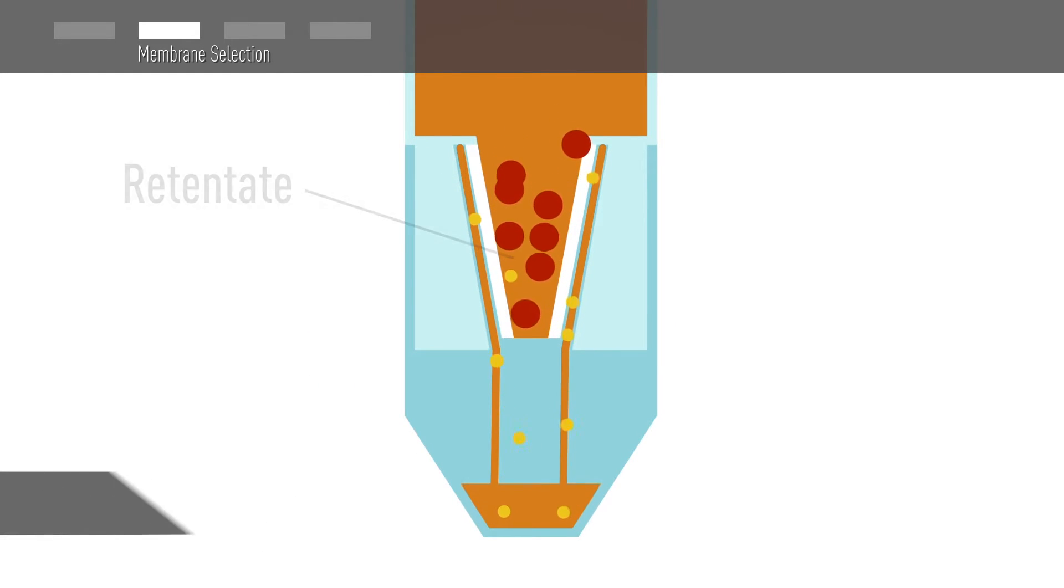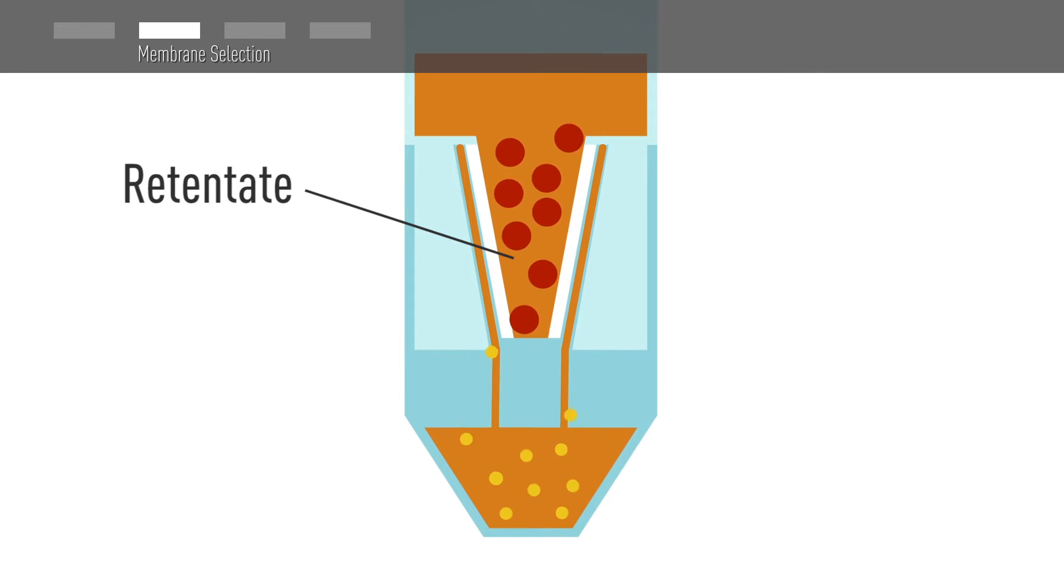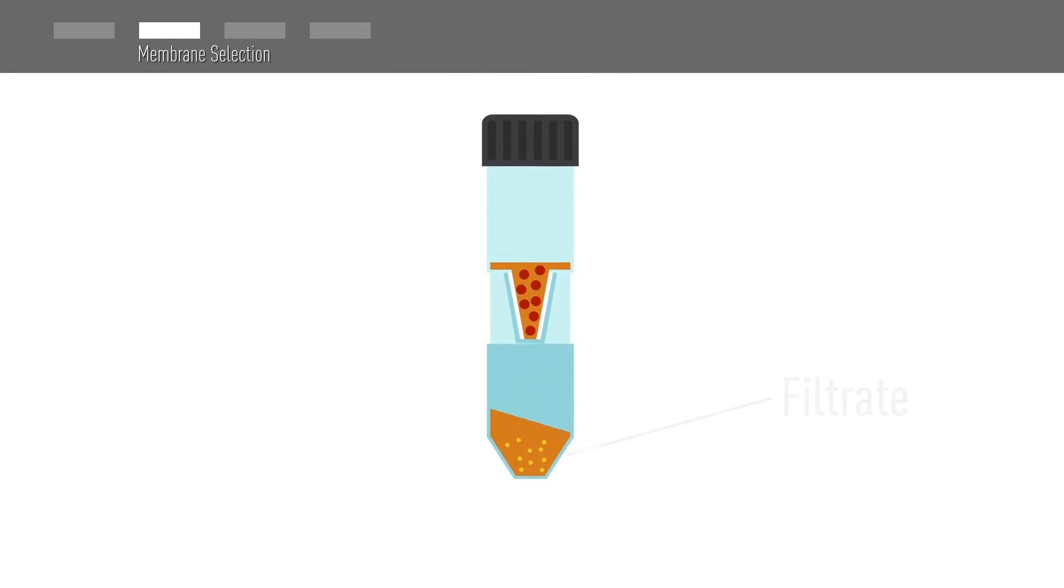The concentrated sample is referred to as the retentate. The molecules and contaminants in solution that are small enough to pass through the pores of the membrane are collected in the filtrate.